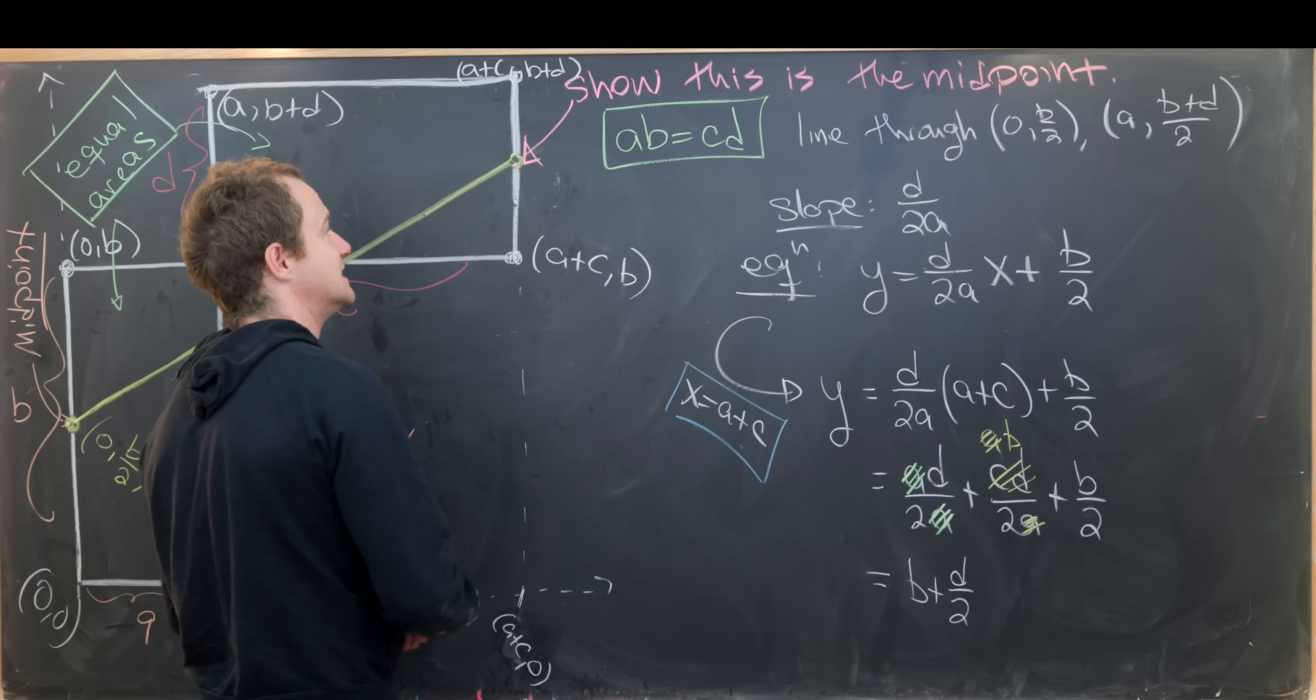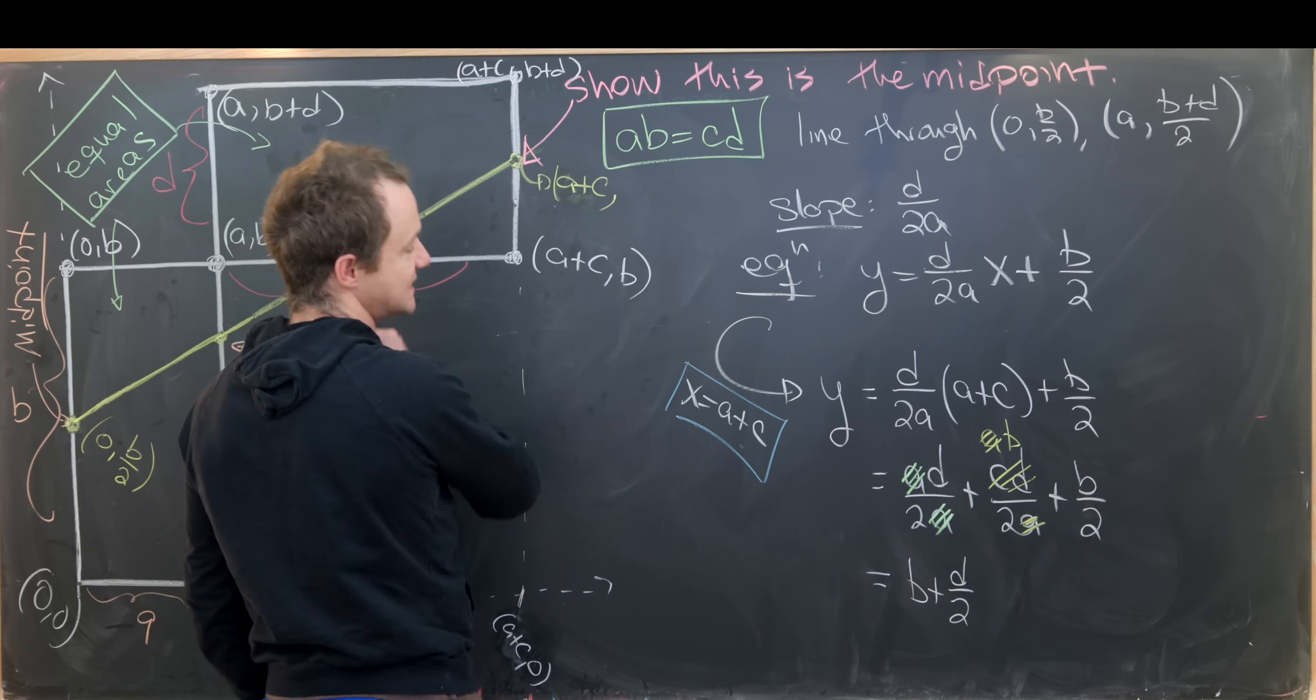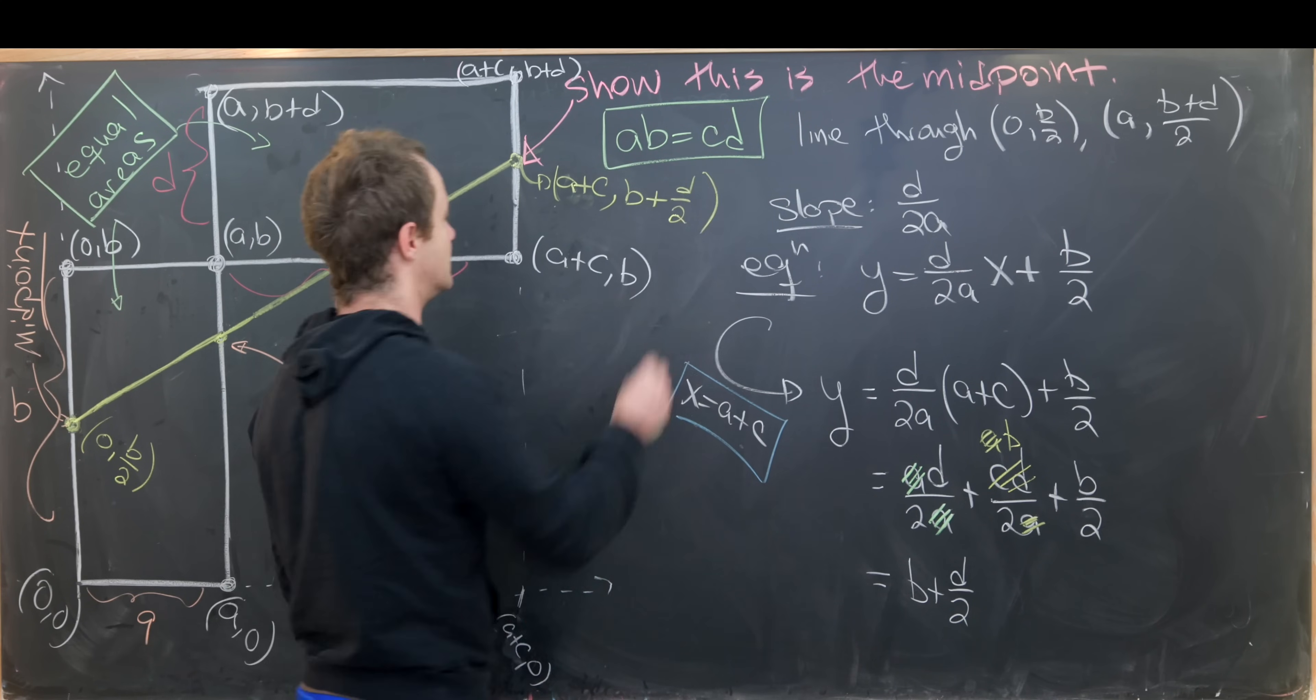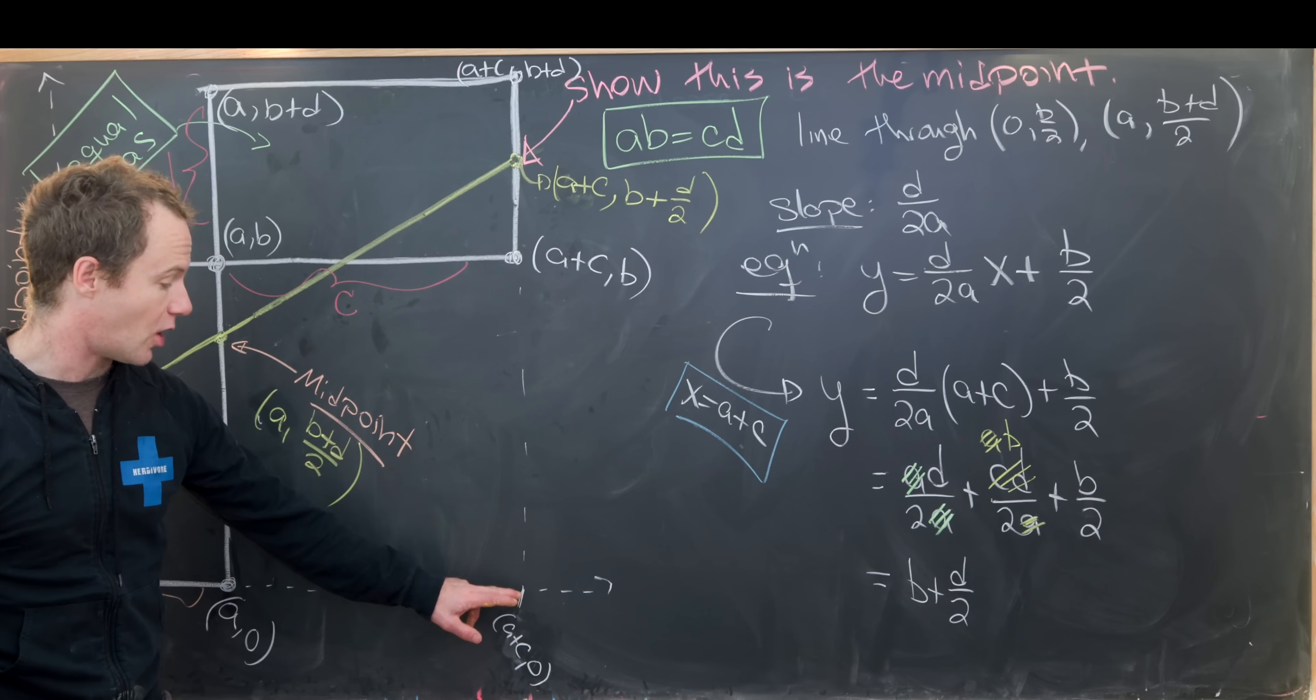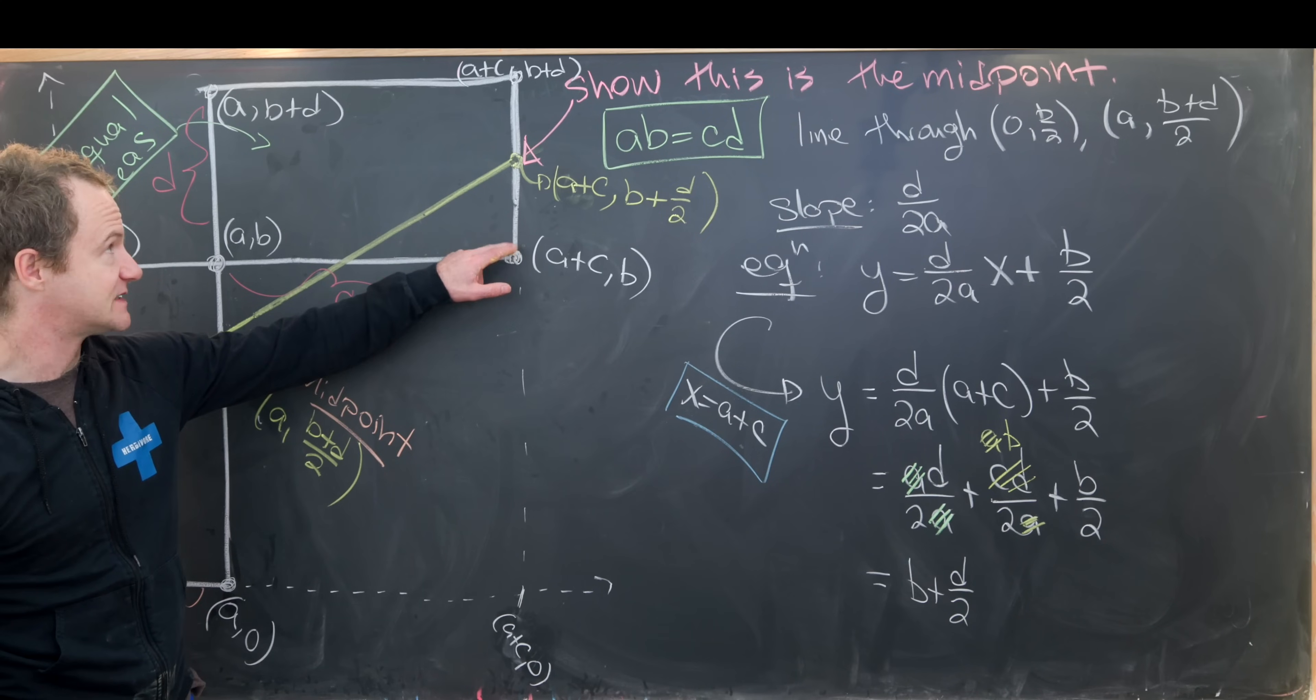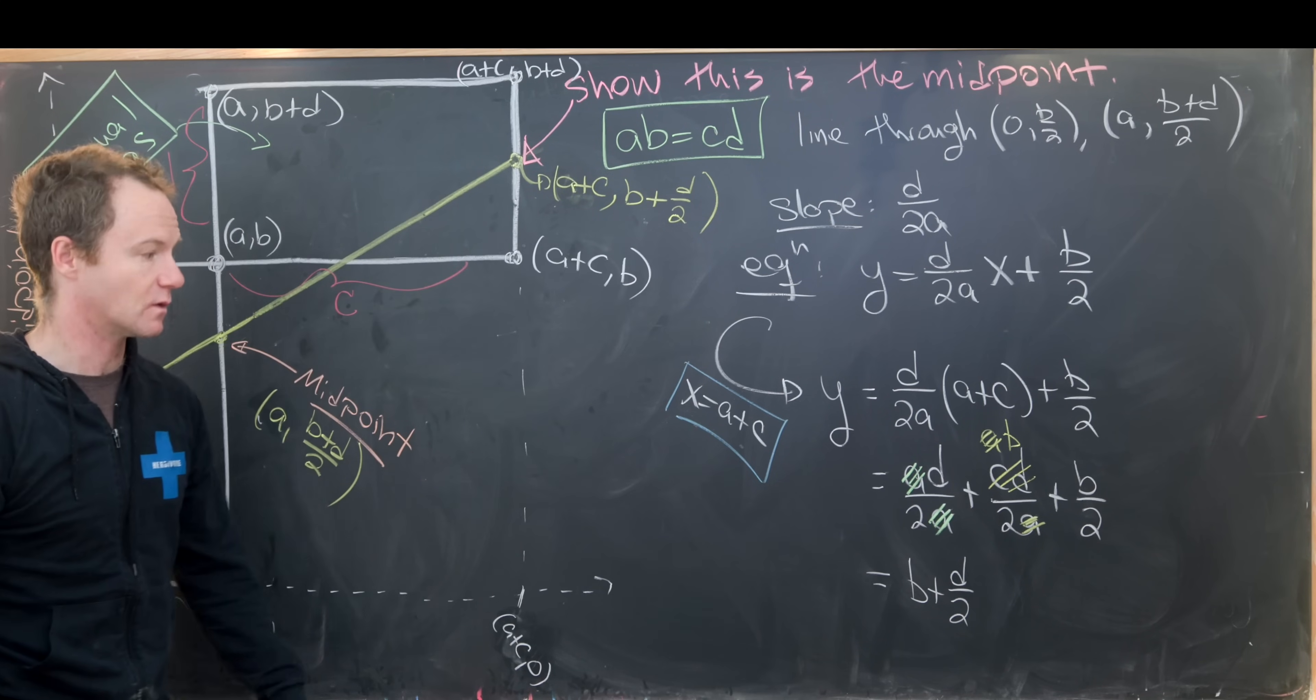But that means this coordinate right here is (a+c, (b+d)/2). But notice that's definitely the midpoint of this edge, because we need to go all the way from here up to b, and then half the distance from b to b+d. But that's exactly going to be this coordinate.